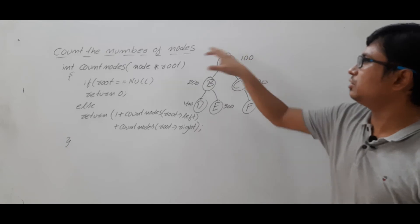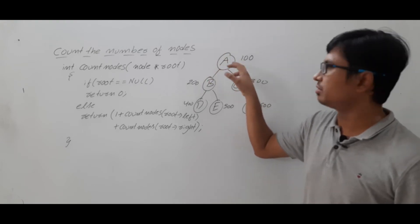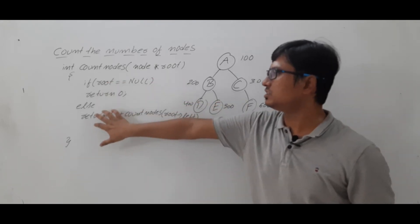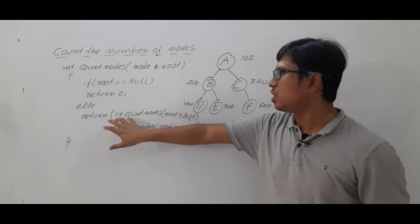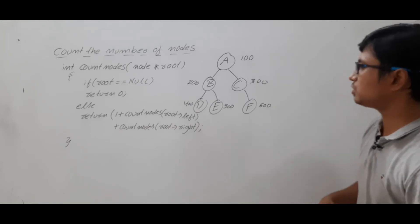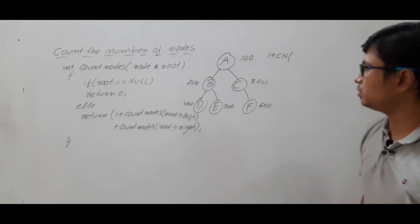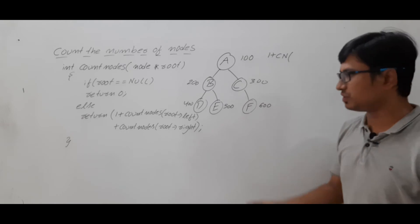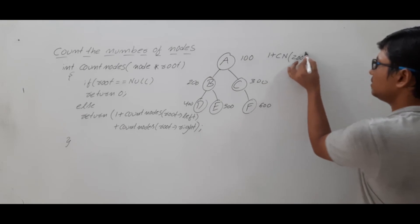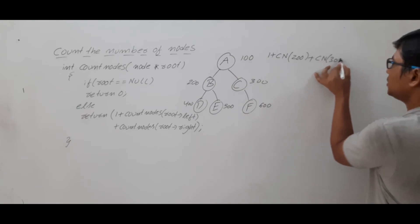Now let's start tracing the program using this binary tree. The root is node 100. Since 100 is not equal to null, this condition is false, so we execute the else part: 1 plus countNodes(root->left) plus countNodes(root->right), which is 1 plus cn(200) plus cn(300). Now I need to execute countNodes(200).